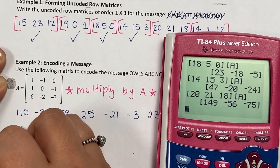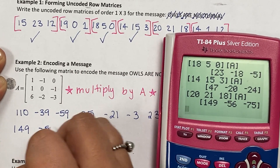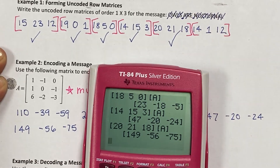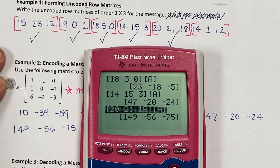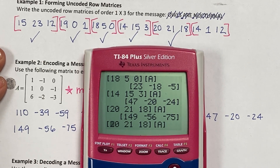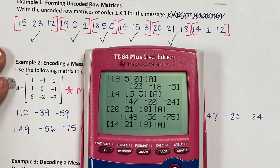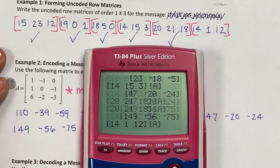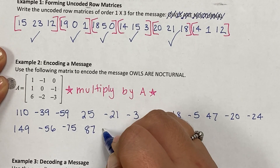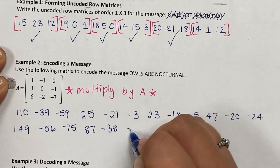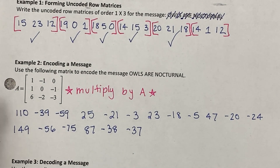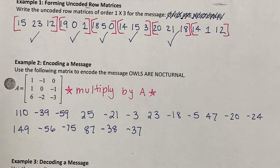I'll keep plugging into the calculator and edit the last entry rather than retyping. The last three numbers of the encoded message come out to 87, negative 38, and negative 37. If you found those numbers on a sheet of paper, you would have no idea that the message says 'owls are nocturnal.' That is encoding a message.